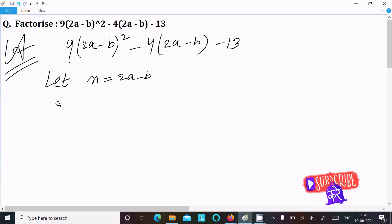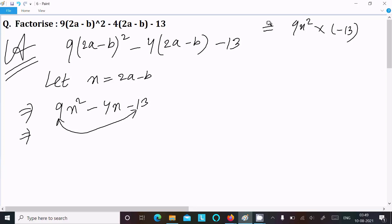Now after that, write here 9x², next is 4x - 13. See, the equation is looking quite simple. After that, multiply first term with the last term. So 9x² into -13, so it comes -117x².